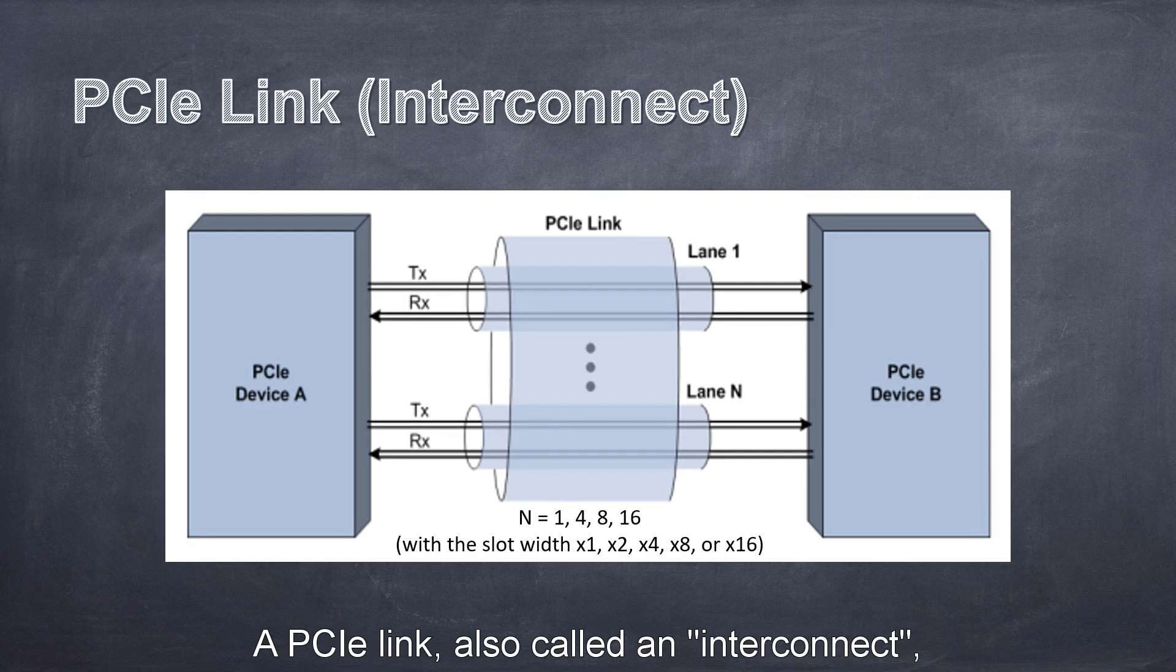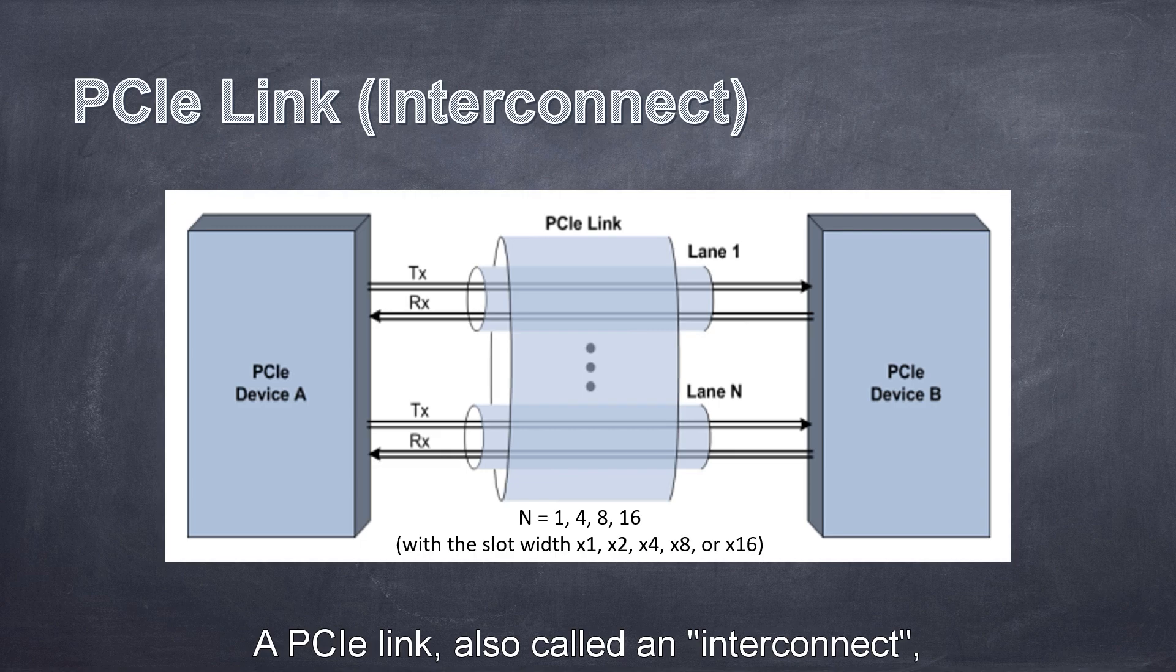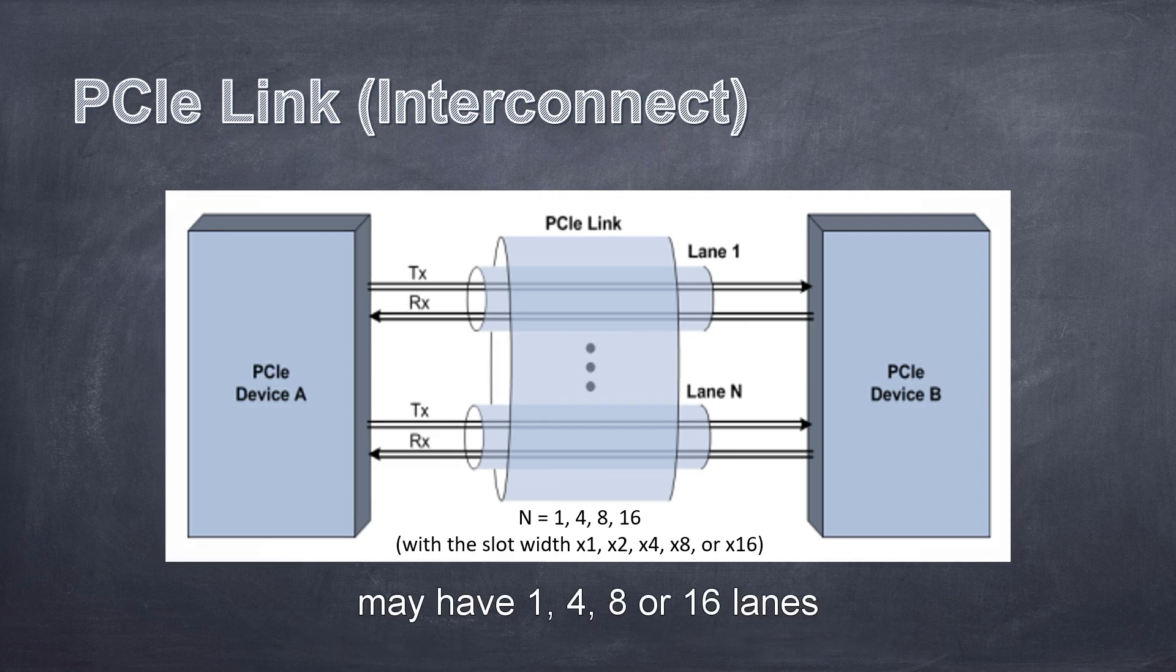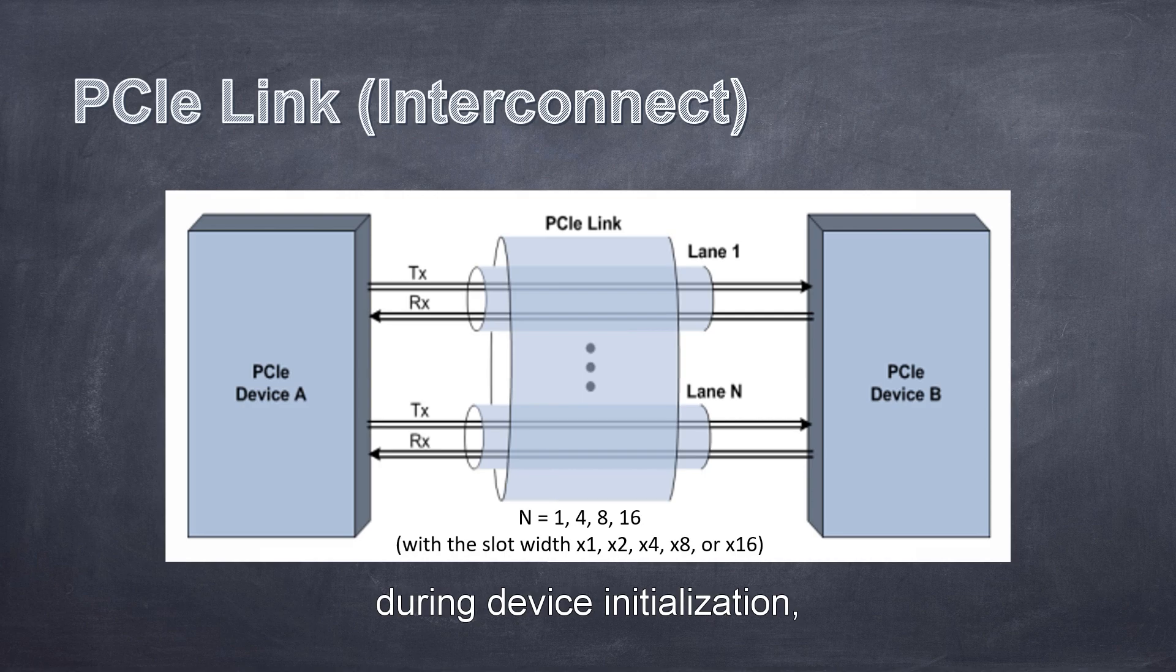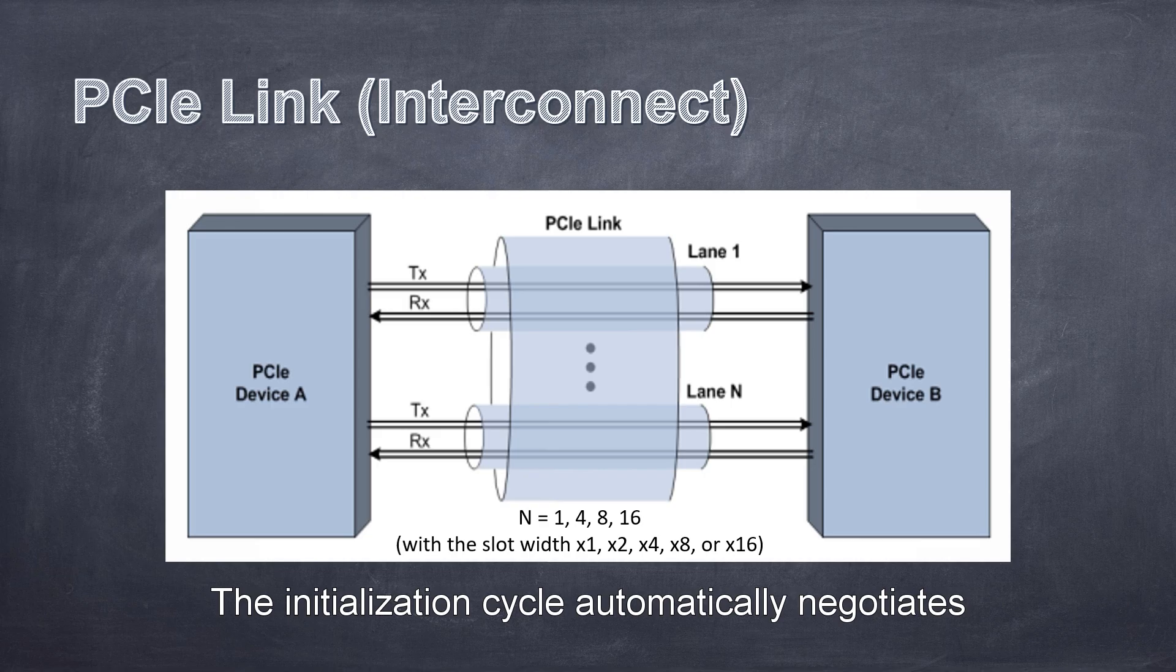A PCIe link, also called an interconnect, may have 1, 4, 8, or 16 lanes with a slot width of X1, X2, X4, X8, or X16. The link count is automatically negotiated during device initialization and can be restricted by either endpoint. A PCIe X1 card can be inserted to a multi-lane slot, for example, an X8 or X16 slot. The initialization cycle automatically negotiates the highest mutually supported lane count.